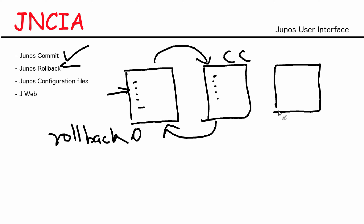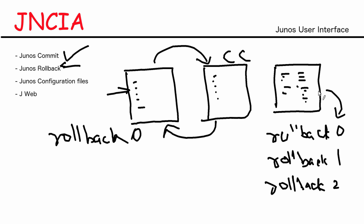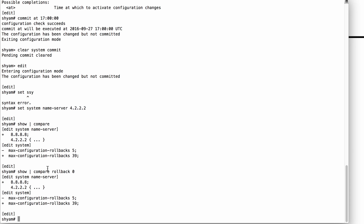When you make your first configuration change and commit it, it gets stored as Rollback 0. When you make more changes and commit again, the new config becomes Rollback 0 and the previous one becomes Rollback 1. Each subsequent commit shifts the numbering up. The maximum number of rollback configurations you can save is 50, numbered from 0 to 49. You can compare your current configuration against other rollback files, such as Show Compare Rollback 1 or Rollback 2, to see a larger set of differences.